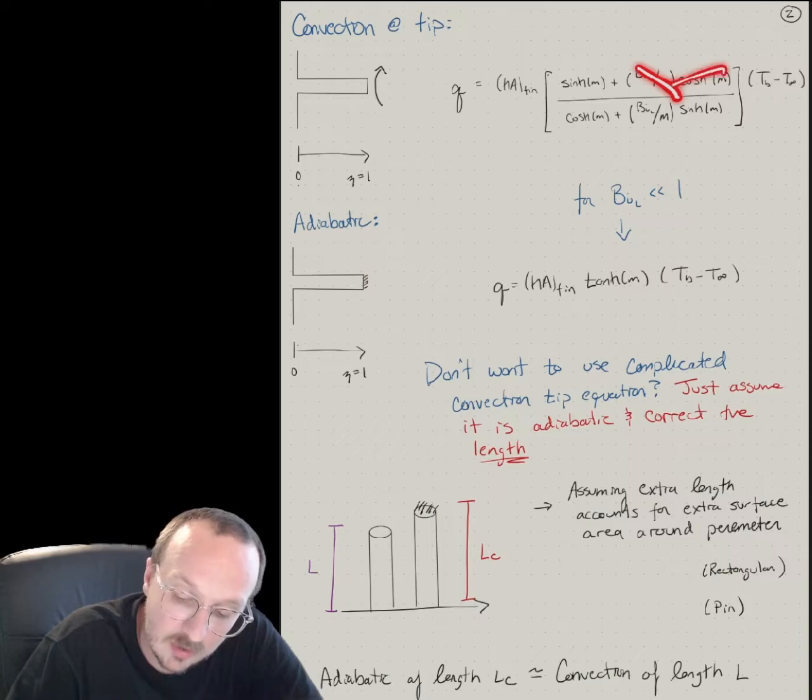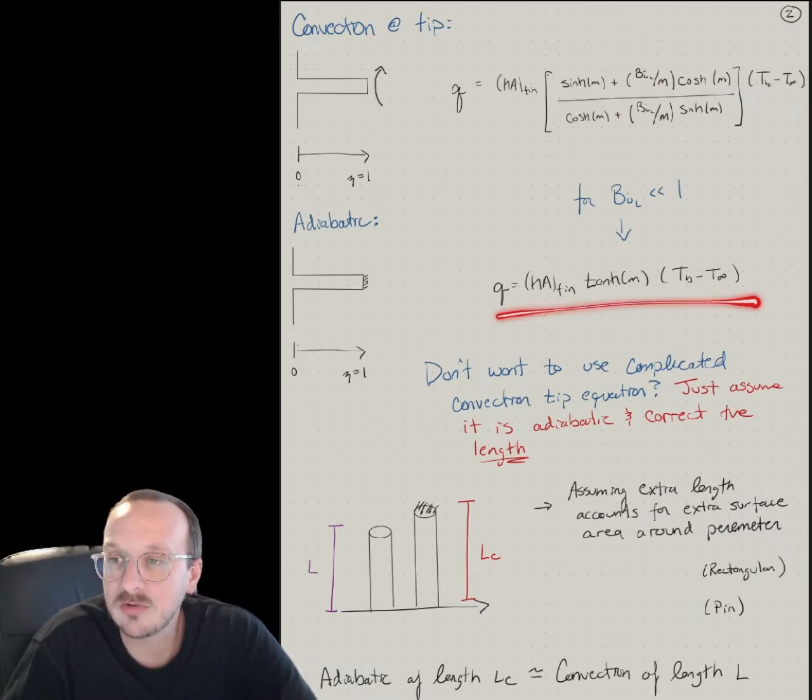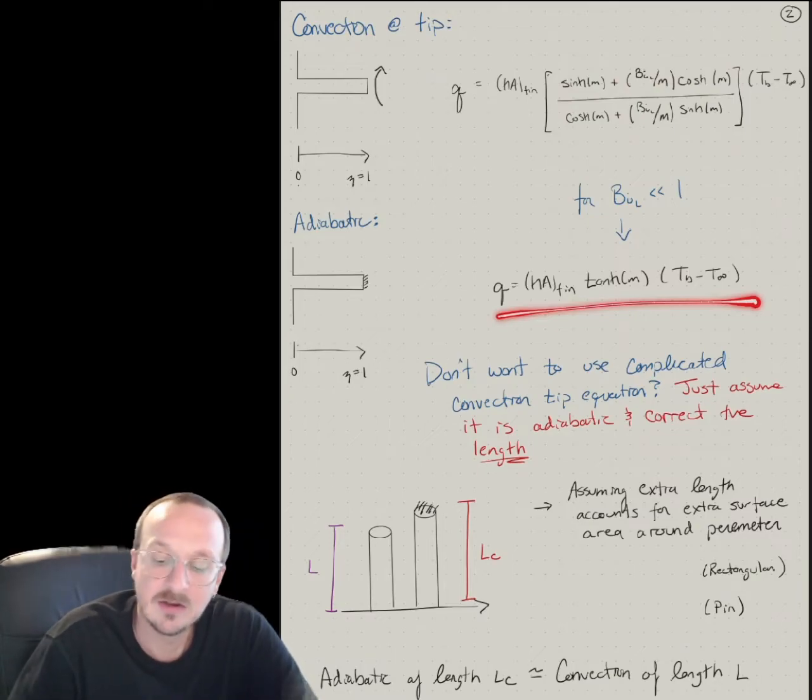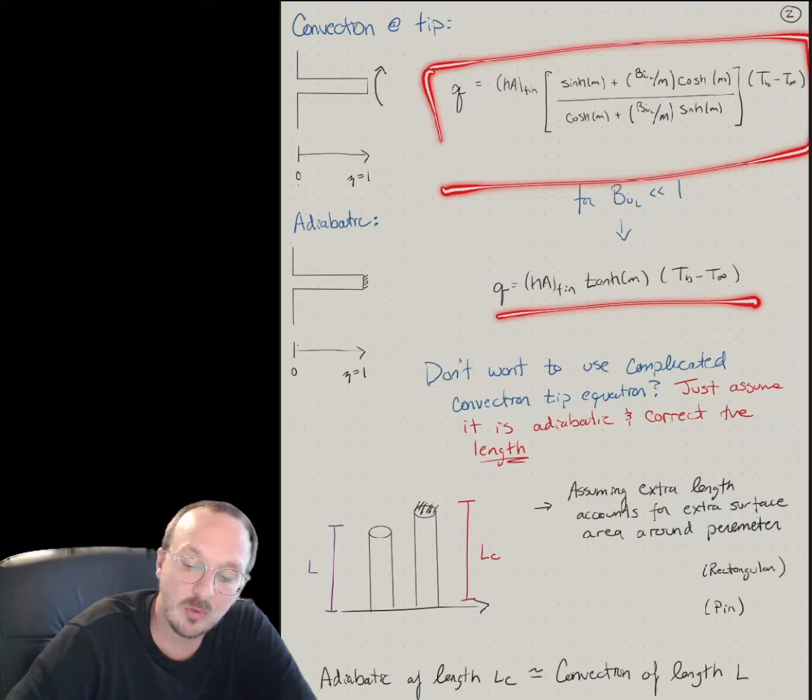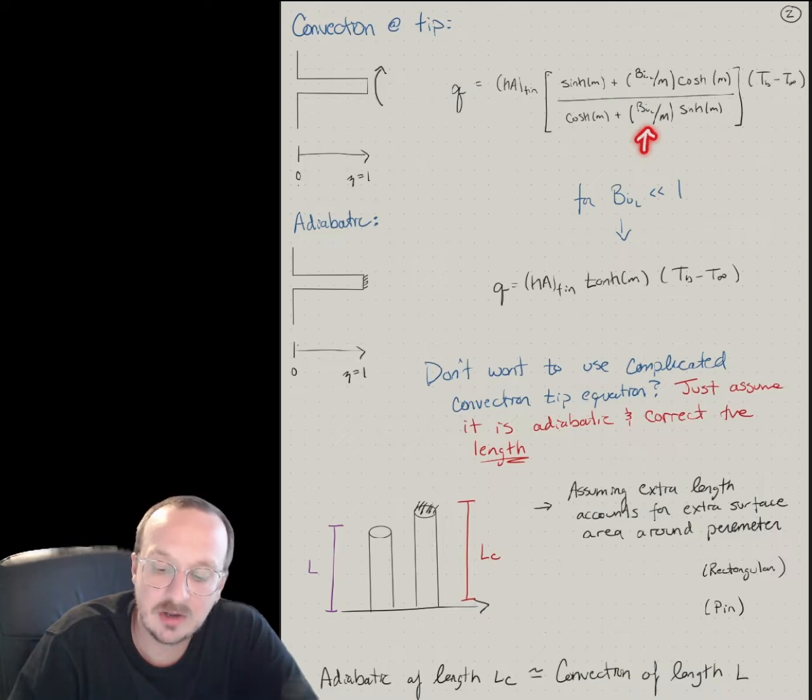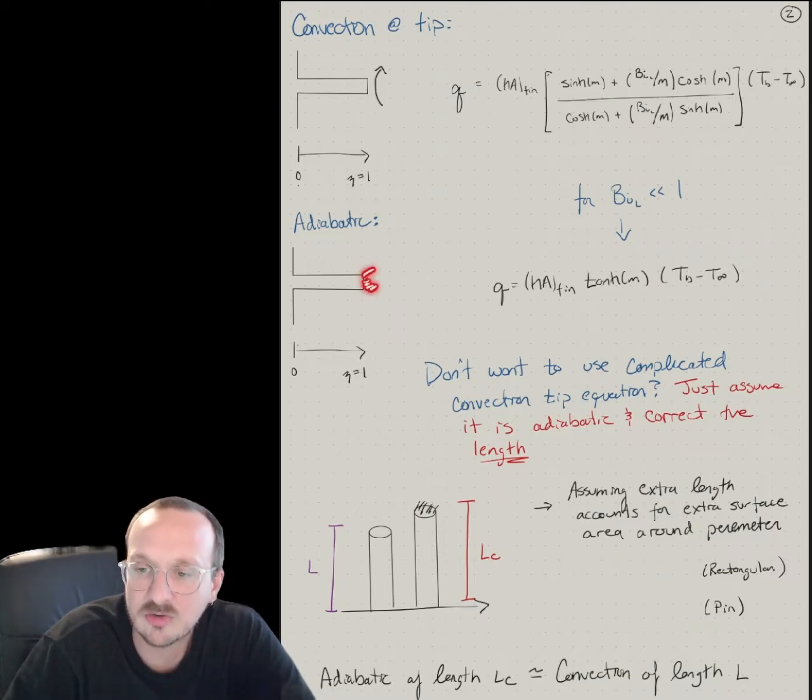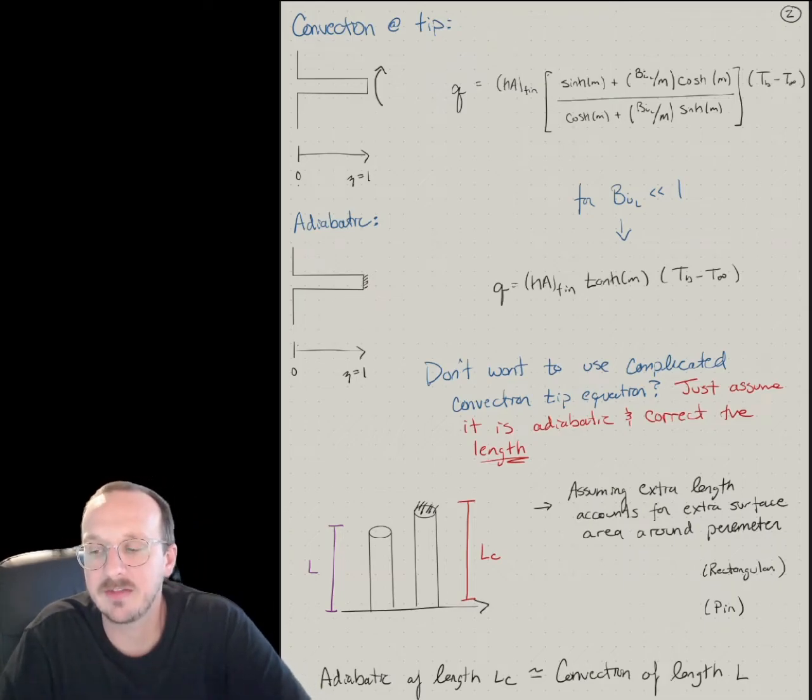So this term would go away. This term would go away. You're left with sinh over cosh. And look, you get the exact same expression for an adiabatic fin tip. So this is just a more complicated version of what we already derived for an adiabatic fin tip. And it's just saying that, yeah, your Biot number is really small, so that just means that there's no convection at this boundary.